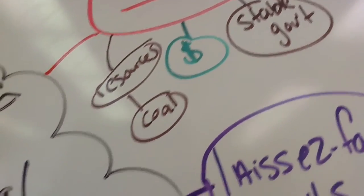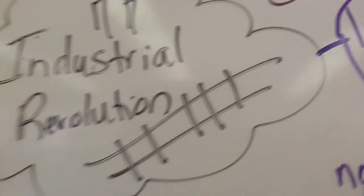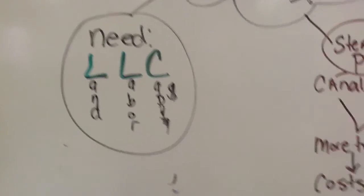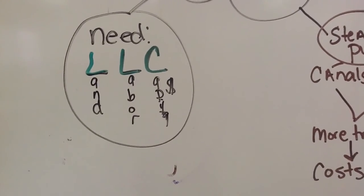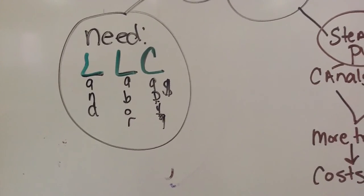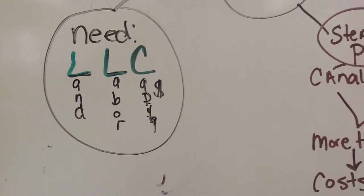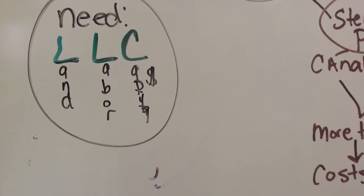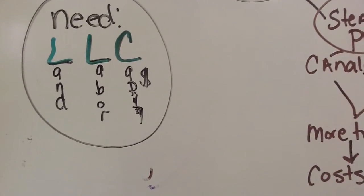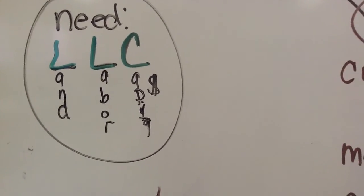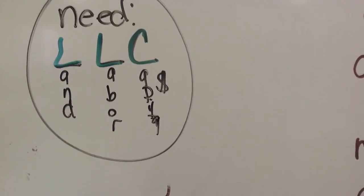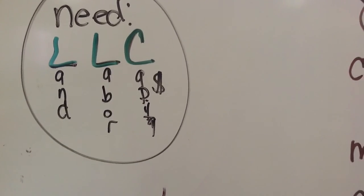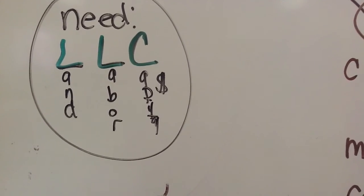In order to industrialize, a country needs three things — remembered as LLC: Land, Labor, and Capital. It needs land for food production and to gain resources from, people to work as laborers, and capital to invest in machines and businesses.